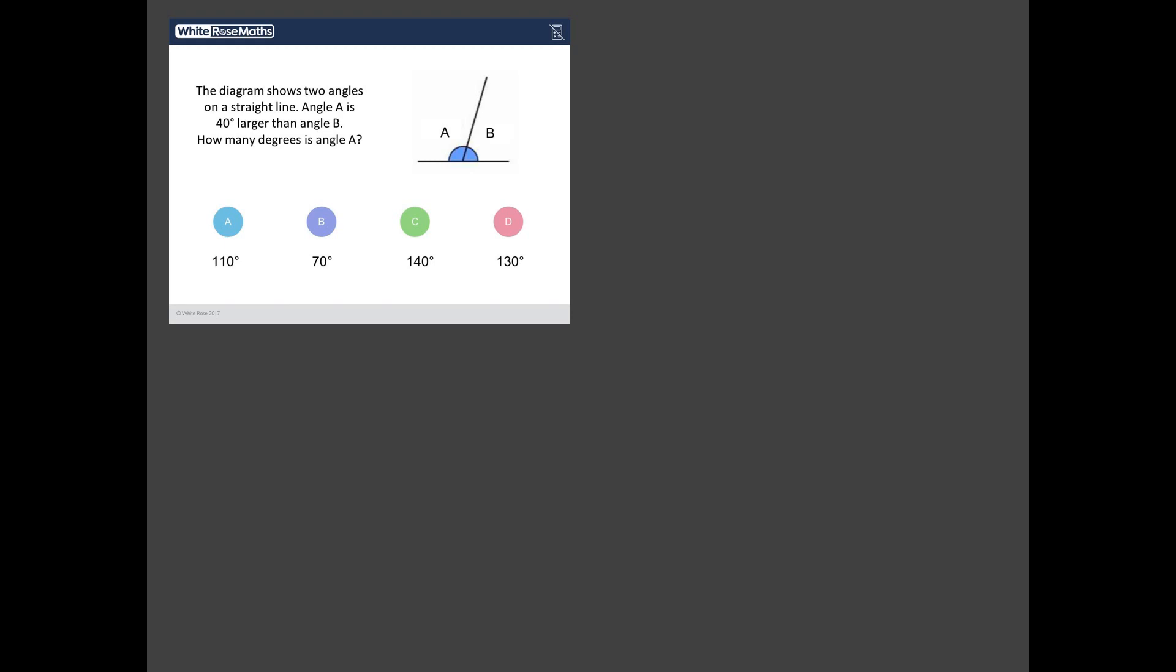Which brings us to the worst answered question. And it is this question here on angles. The diagram shows two angles. Angle A is 40 degrees larger than angle B. How many degrees is angle A? Right, what do we know about angles on a straight line? Well, angles on a straight line around a point like that, they add up to 180 degrees. So whenever we work out angle A and add it to angle B, we know they've got to equal 180 degrees. That's a fact. But the other thing we know is that angle A is 40 degrees larger than angle B.